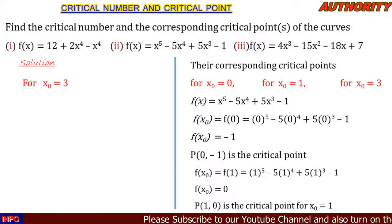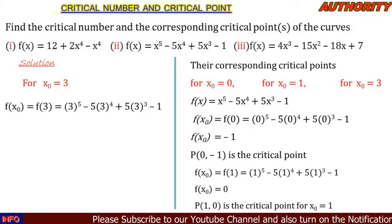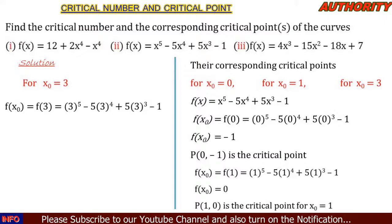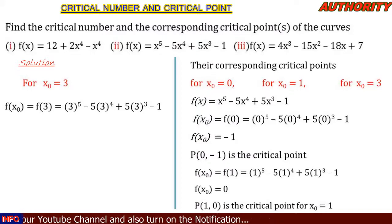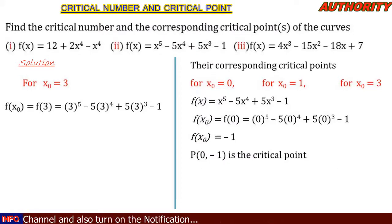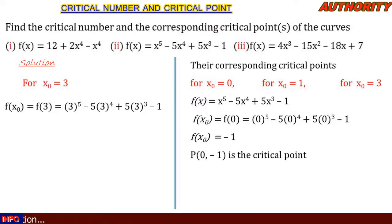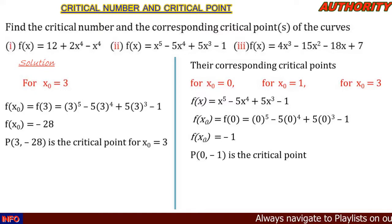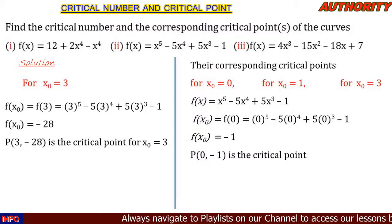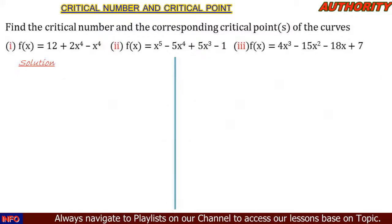For x₀ = 3: f(3) = (3)⁵ - 5(3)⁴ + 5(3)³ - 1. When simplified this gives -28. So the critical point P(3, -28) corresponds to x₀ = 3.